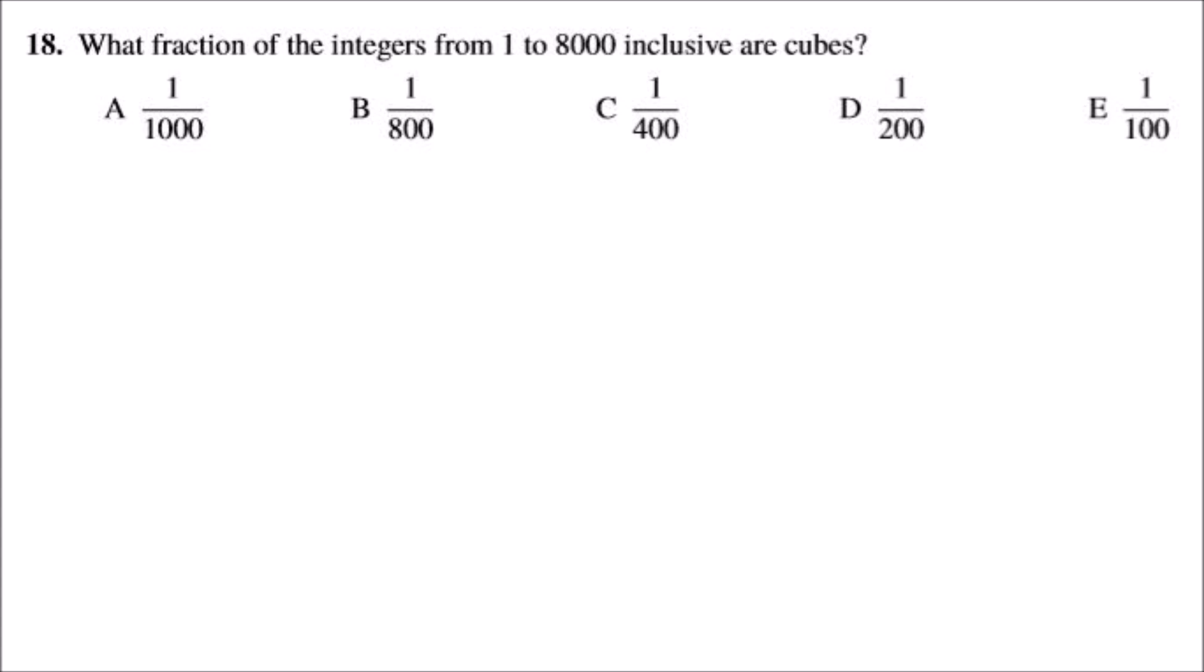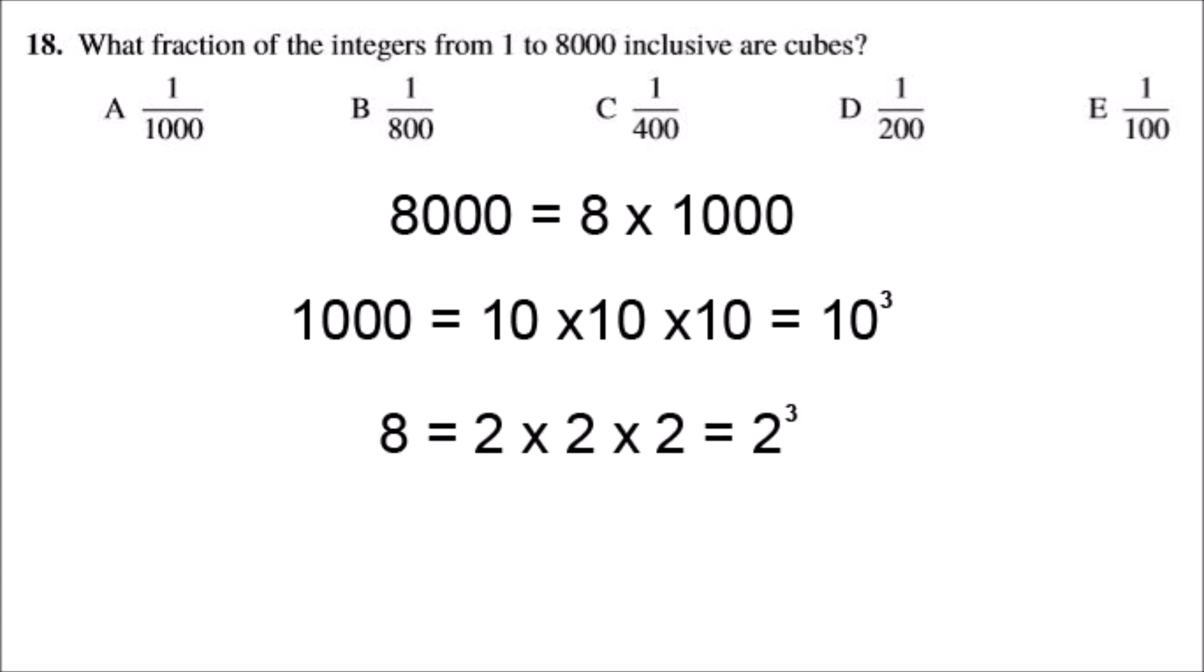So if we start with 8,000, we can split that up into 8 times 1,000. And 1,000 is the same as 10 times 10 times 10, which is 10 cubed. And 8 is 2 times 2 times 2, or 2 cubed.